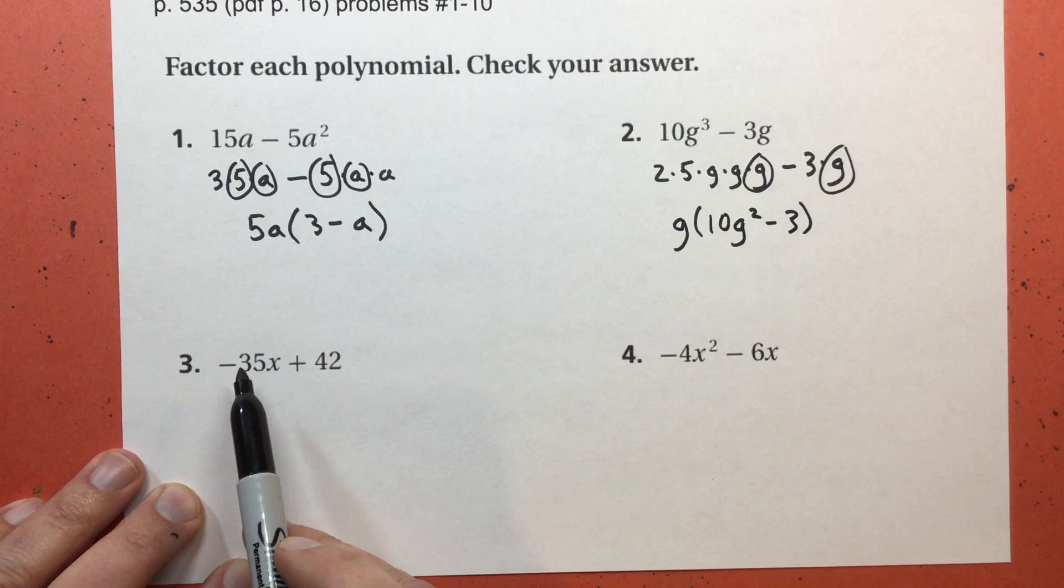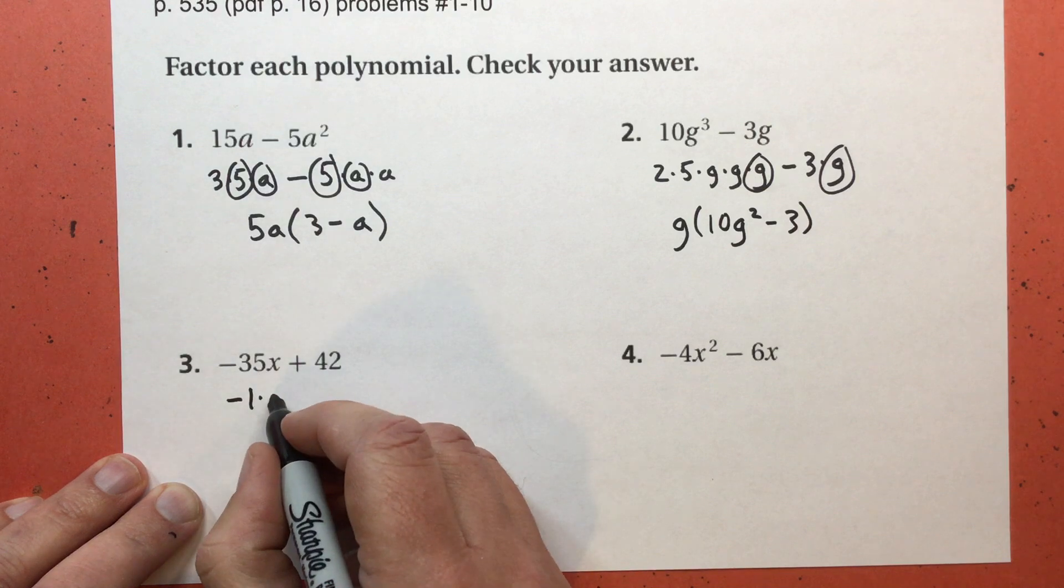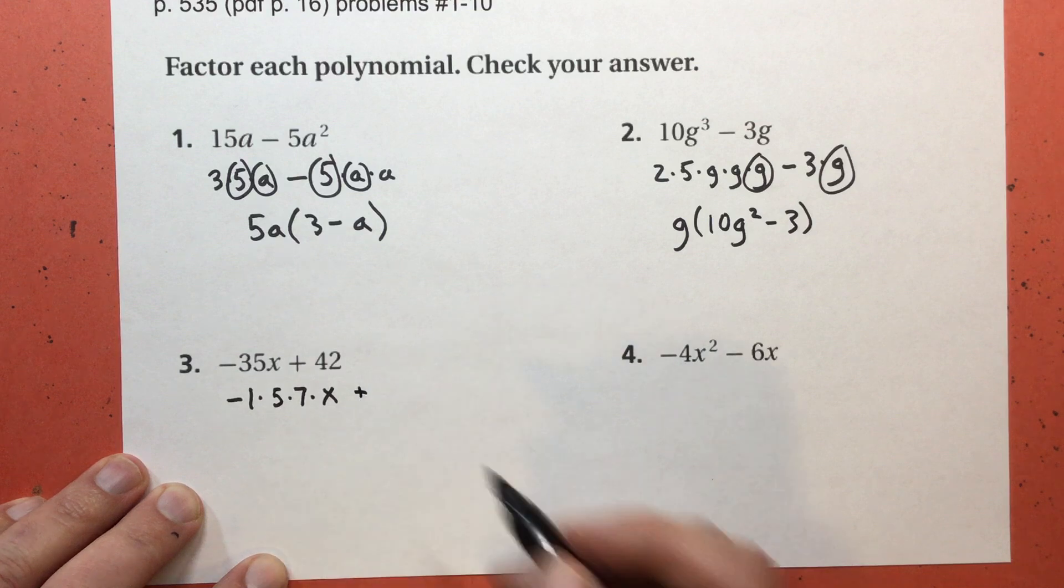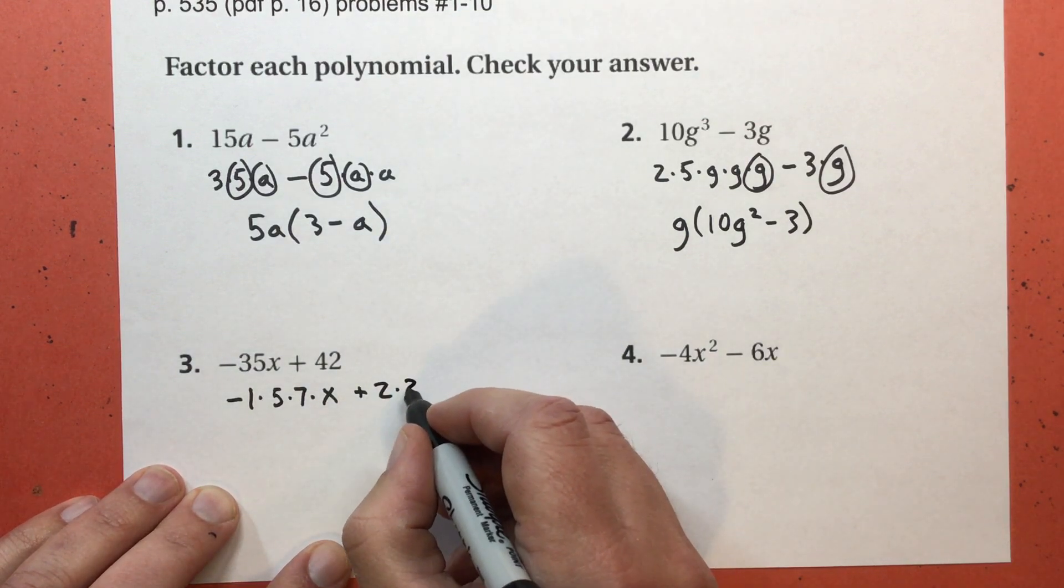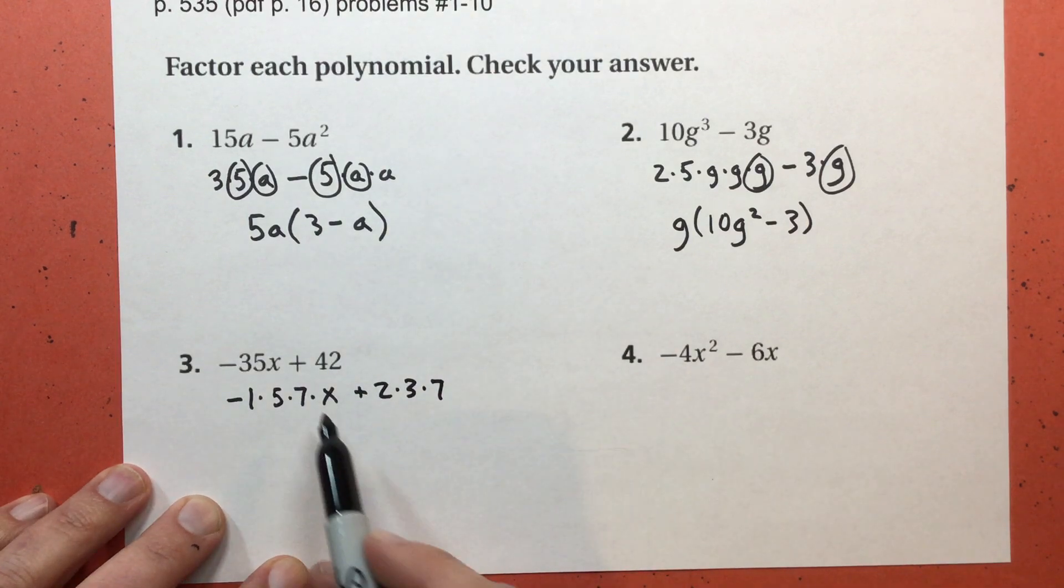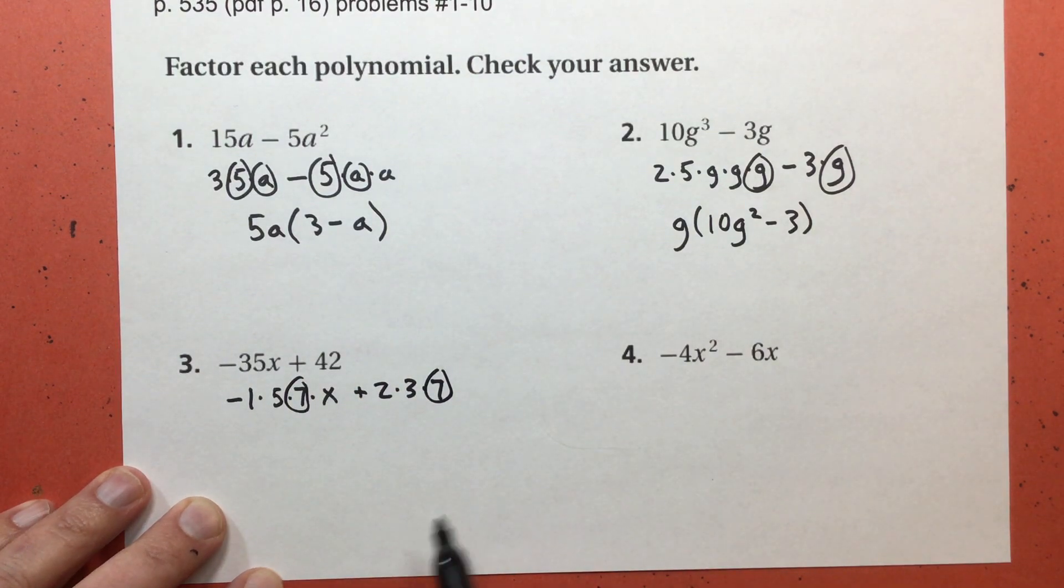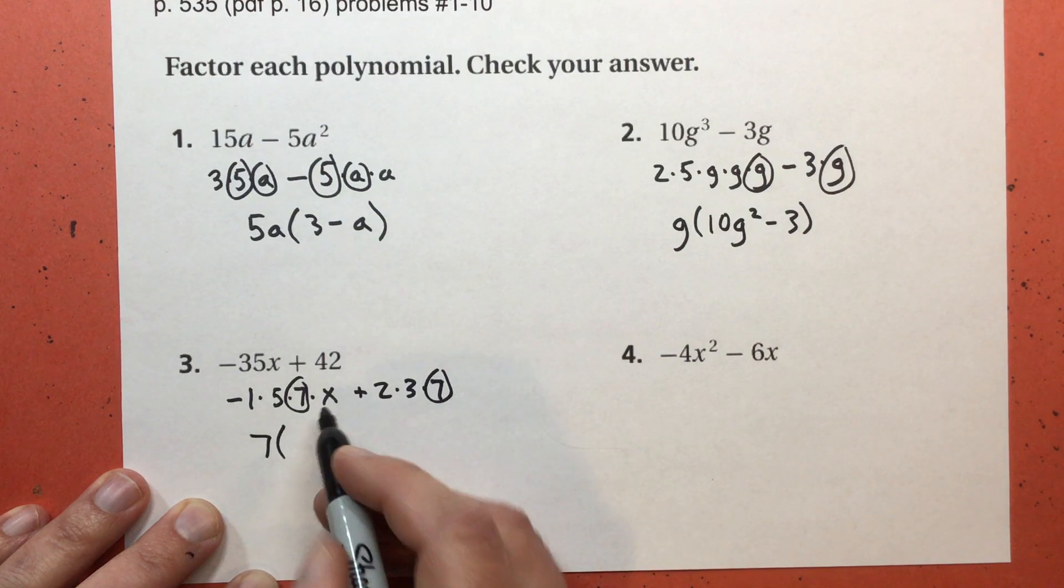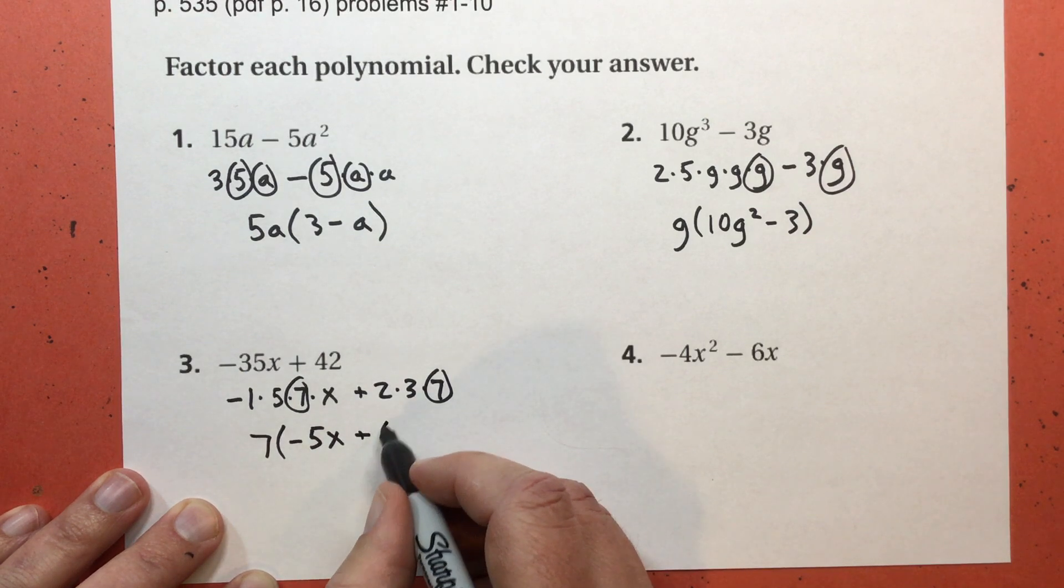Think prime. Negative 35. Don't forget the negative. Negative 1. 35 is 5 times 7. And of course, I have the X. 42 is 2 times 21. 21 is 3 times 7. So what factor is here that's also here? The only thing I see is the 7. So my greatest common factor is 7. Negative 1 times 5 times X is negative 5X. 2 times 3 is 6. Plus 6.